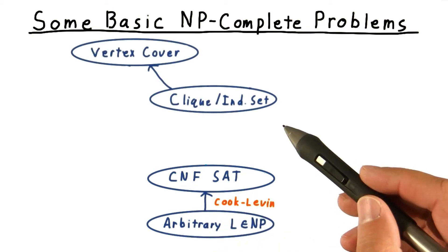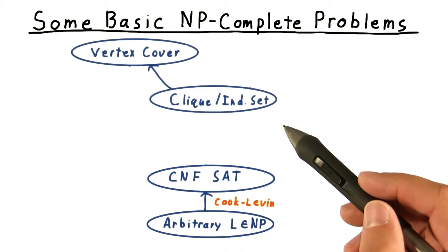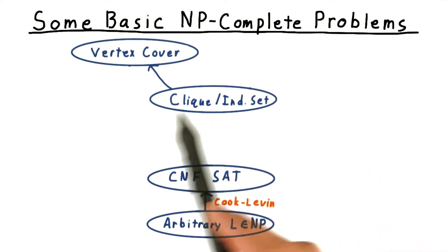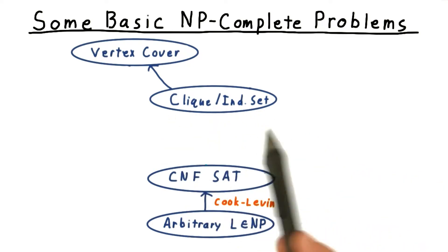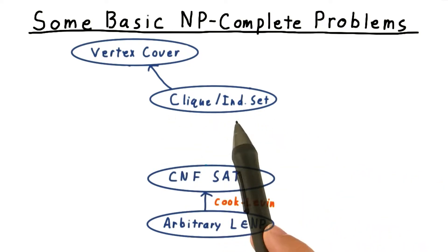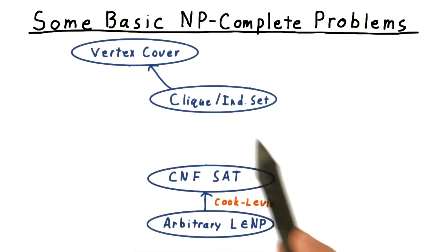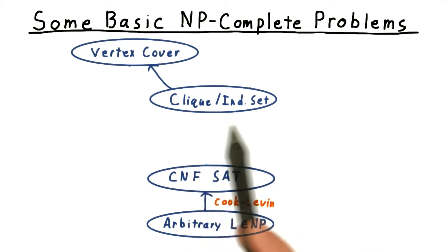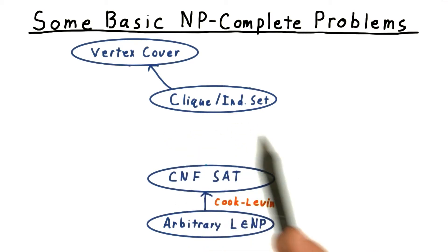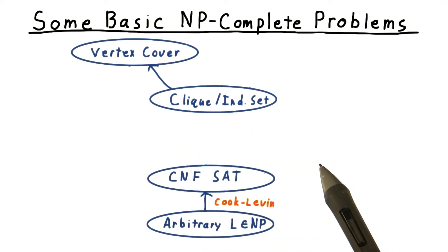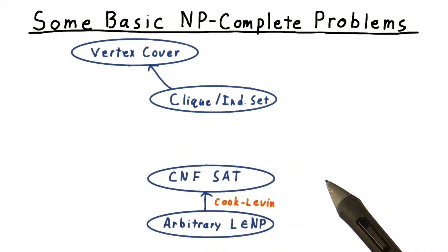We did do another polynomial reduction — one of the independent set, or clique problem, to the vertex cover problem. I'm treating clique and independent set here as one, because the problems are so similar.